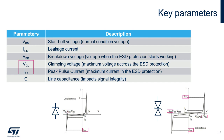The last key parameter is line capacitance. In the frequency domain, an ESD protection can be modeled with a diode with a junction capacitance. This capacitance can impact signal line integrity as any extra capacitor placed on a signal line. An ESD protection can be unidirectional, like the IV curve on the left, or bidirectional, like the IV curve on the right.